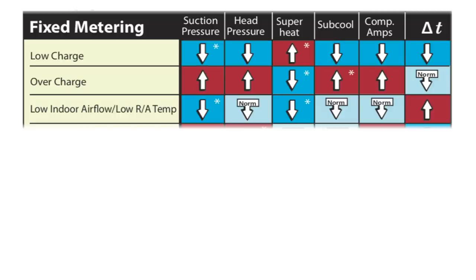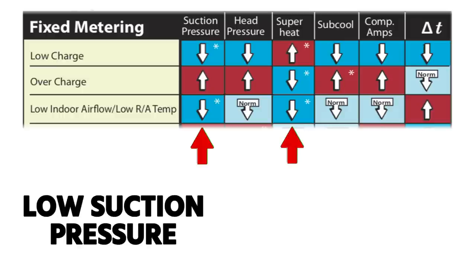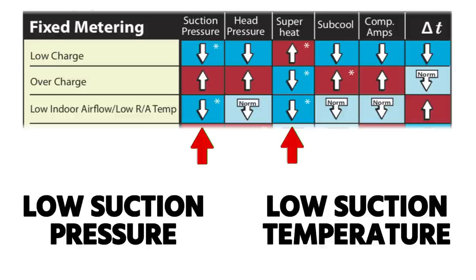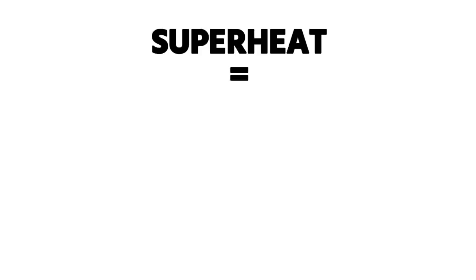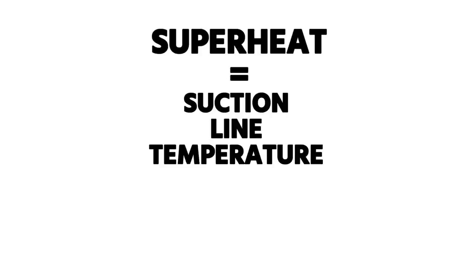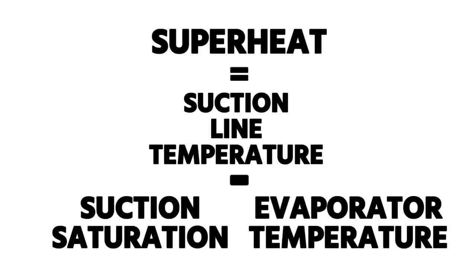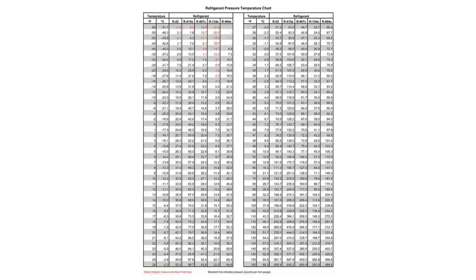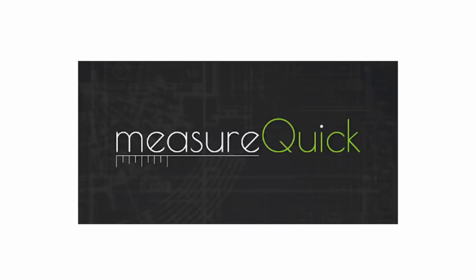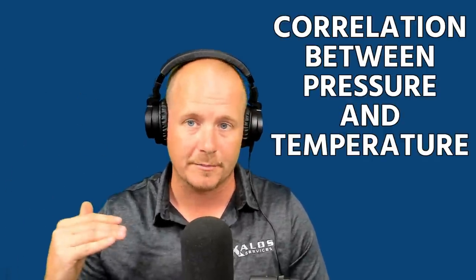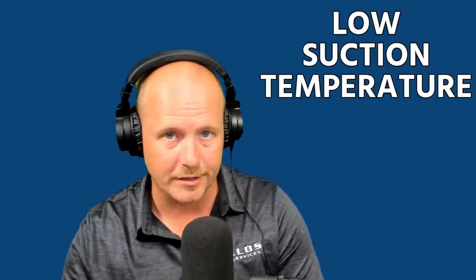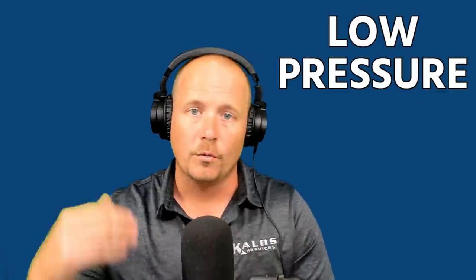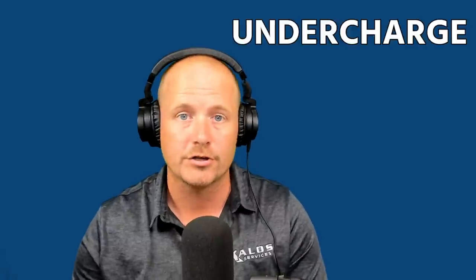When you actually connect to the system, what the chart shows is you're going to see low suction pressure and low superheat — meaning low suction pressure and low suction temperature. Superheat is your actual suction line temperature minus your suction saturation temperature, which you get from a PT chart, an app, or MeasureQuick. That differential — low suction temperature and low pressure together — differentiates low airflow from other causes of low suction pressure like undercharge or a restriction.